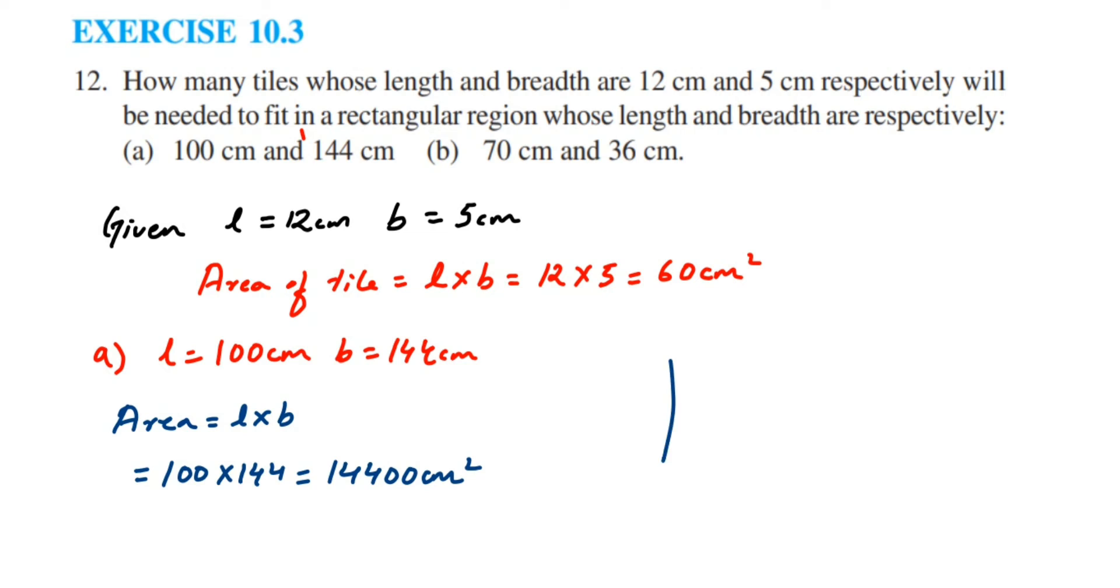Now see what they're asking here. We have a rectangle region like this and we have to put a tile whose area is 60 cm square. How many 60 cm square will be required here to fill the entire region? How we're going to do here? We're going to divide this whole area with the area of one tile. Then we're going to get that many tiles.